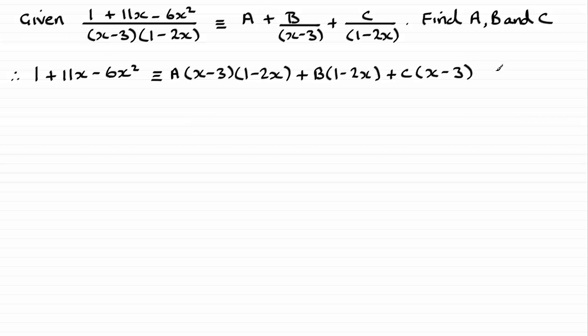Okay, so all we need to do now is just pick appropriate values for x. And it's good to just make each of these brackets equal to zero. So, if we were to take this bracket and make it equal to zero, then x would equal 3. So, let's start with that. Let x equal 3.